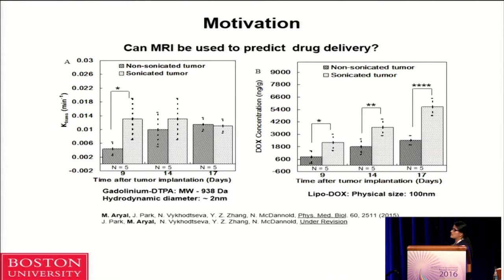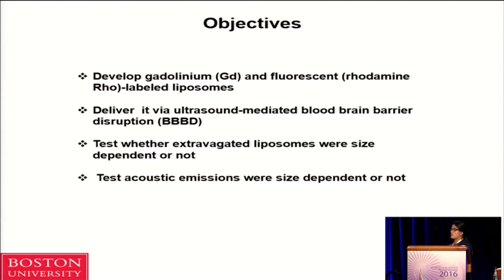To reach this central goal, we started as a first step by making liposomes labeled with gadolinium and fluorescent markers, and delivered them through the blood-brain barrier. The main objectives are to make two different sized liposomes labeled with gadolinium and fluorescent dye, deliver them through the blood-brain barrier using ultrasound, look at the extravasation of those lipids, and measure the acoustic emission during treatment to see whether the behavior is size-dependent.